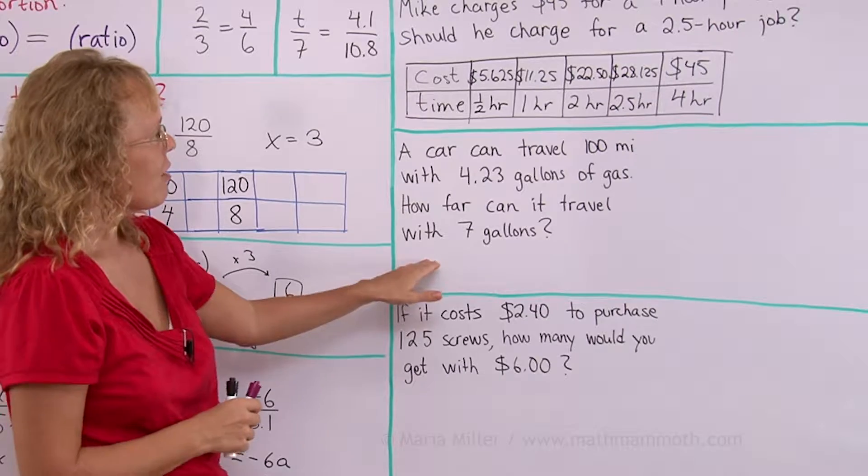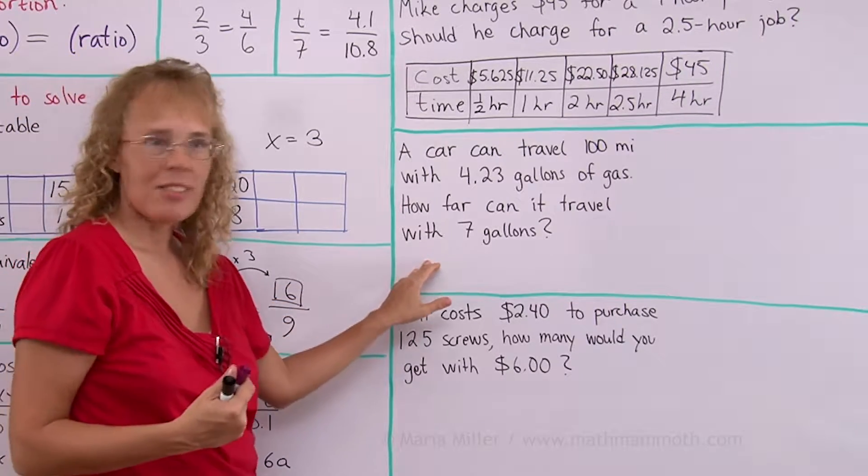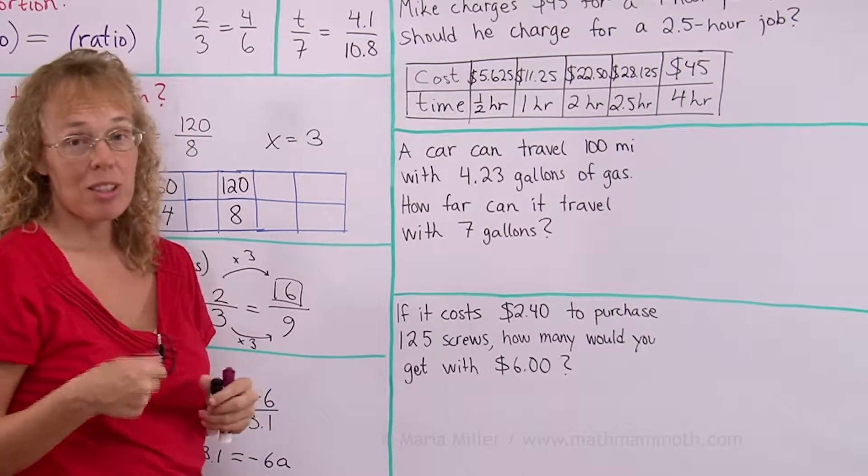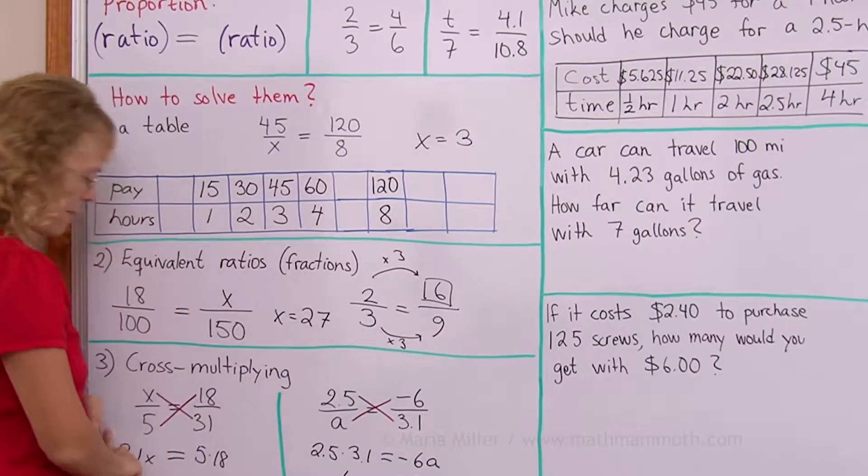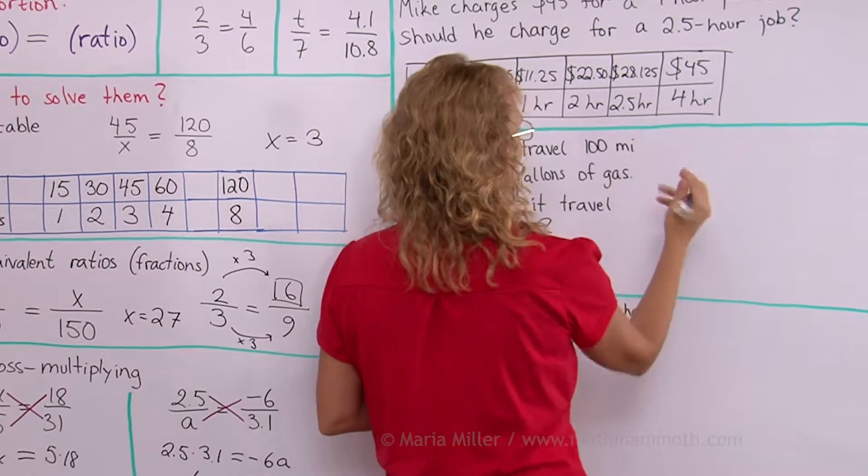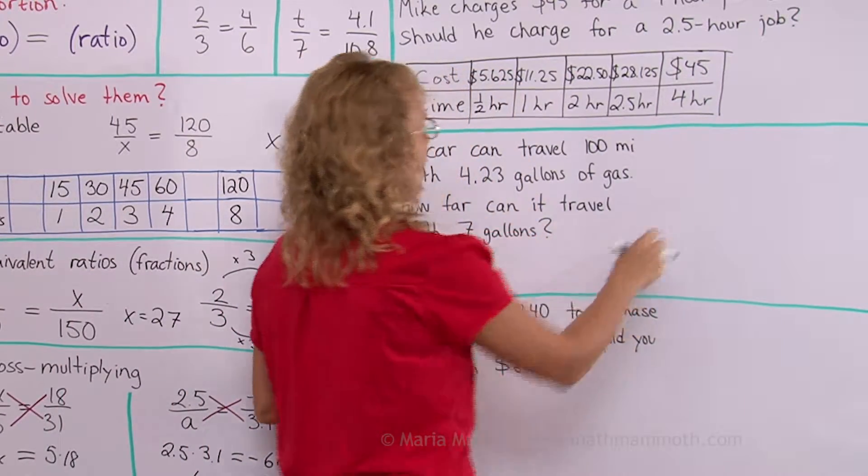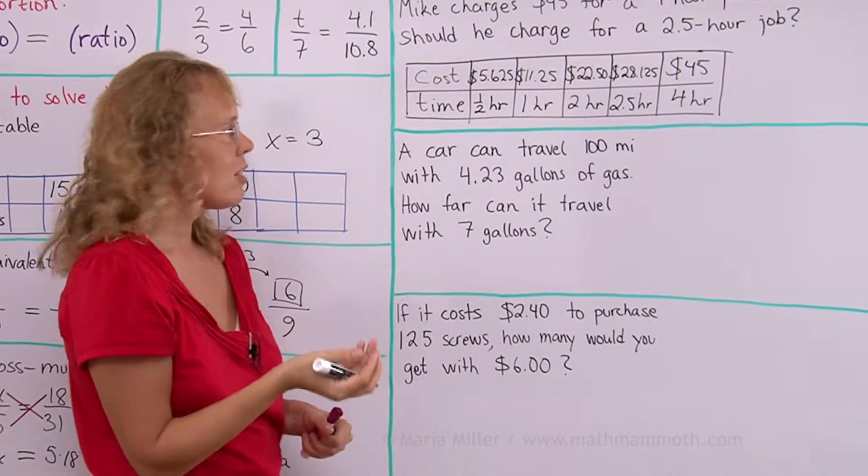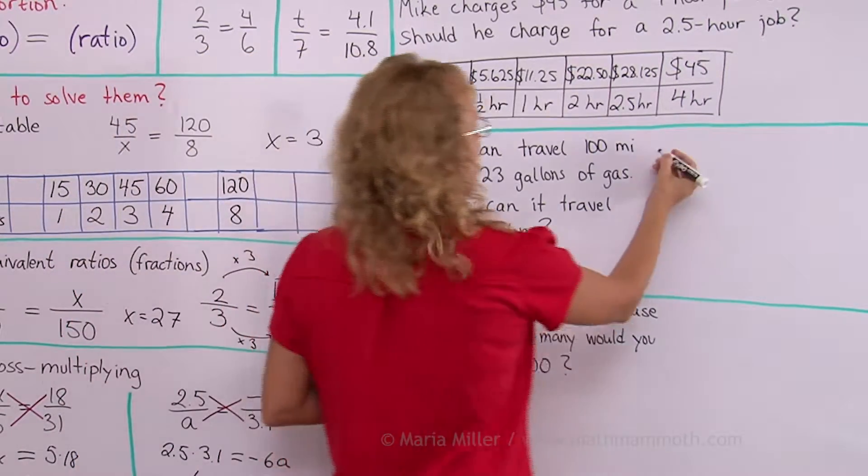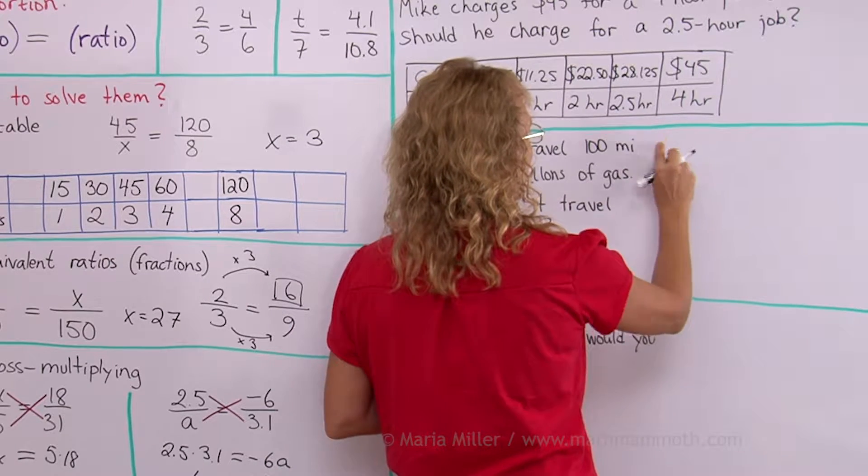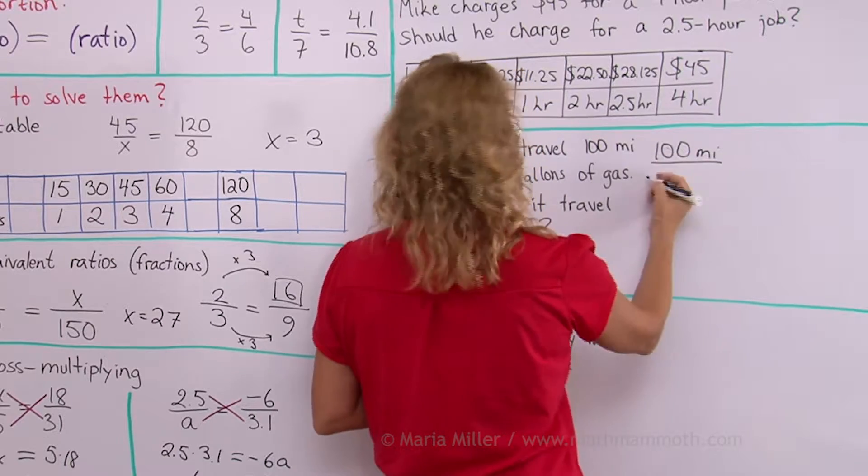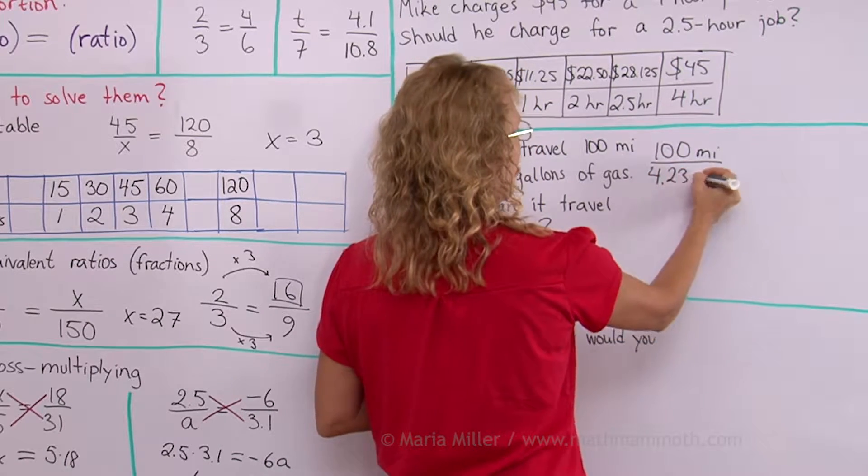A car can travel 100 miles with 4.23 gallons of gas. So how far can it travel with 7 gallons? This time I'm gonna write the proportion. And so I put my first ratio here. I can put either the miles over gallons or gallons over miles. That actually does not matter. But usually people talk about miles per gallon so I'll put miles on top. 100 miles per 4.23 gallons.